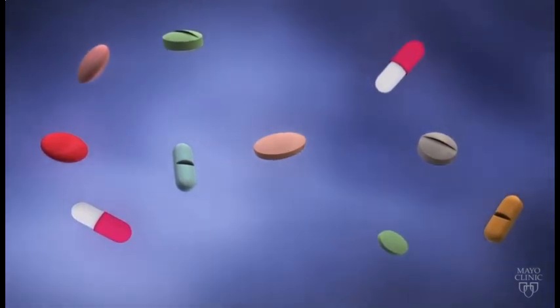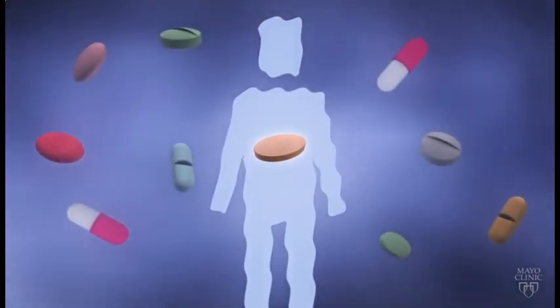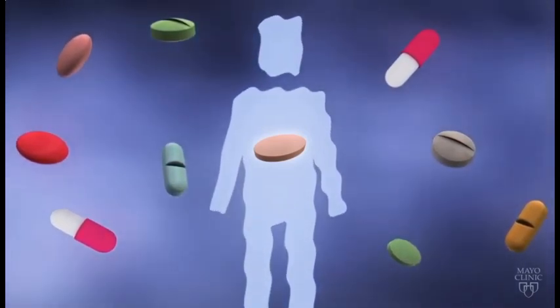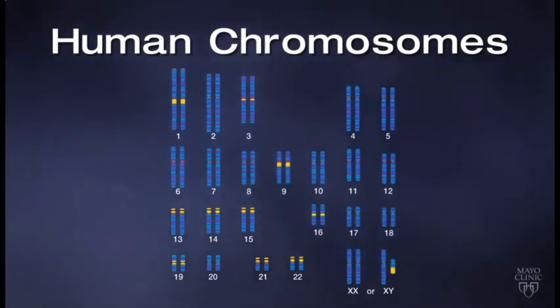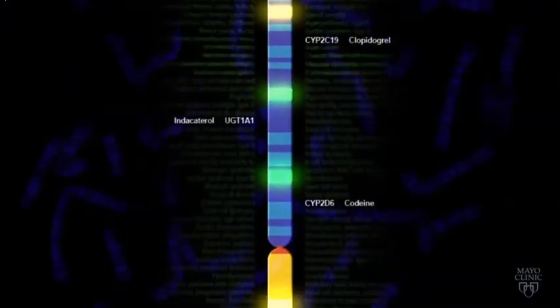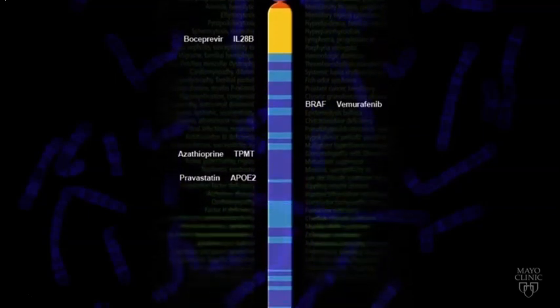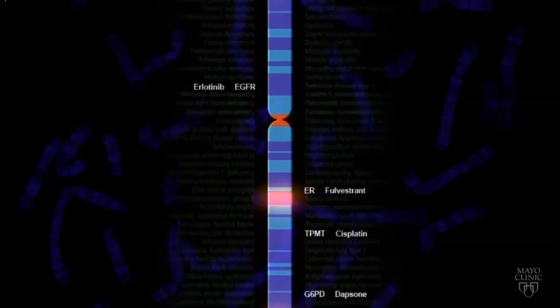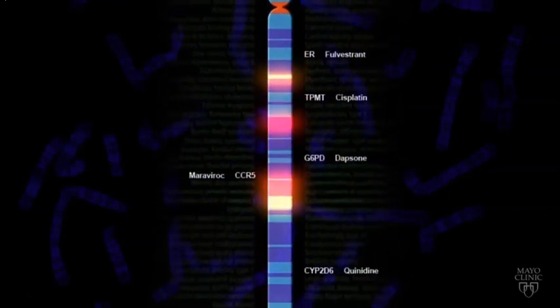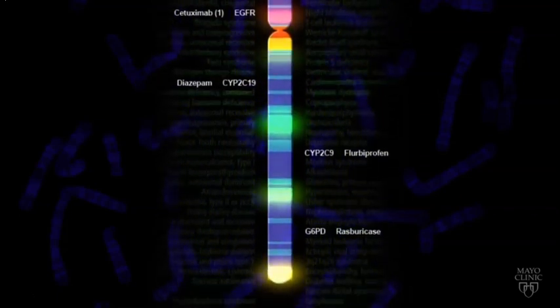For example, if you have high cholesterol, your doctor might prescribe one of many statin medications. But these drugs can have significant side effects, and finding the right one can be expensive and time-consuming. Pharmacogenomic testing is now available to show how your body is likely to respond to a certain statin, helping doctors prescribe the right dose or a different medication. Today, pharmacogenomic testing can help predict how an individual may process and metabolize hundreds of different medications, including those used to treat heart disease, high blood pressure, psychiatric disorders, pain, cancer, and many other conditions.